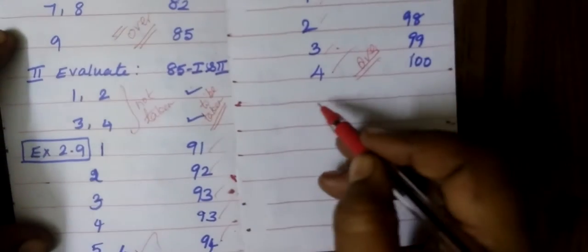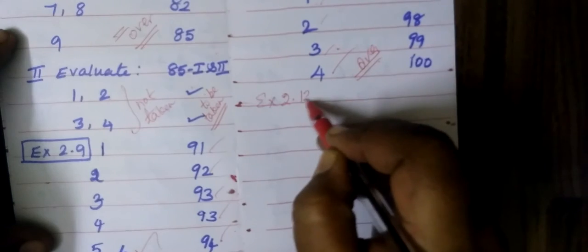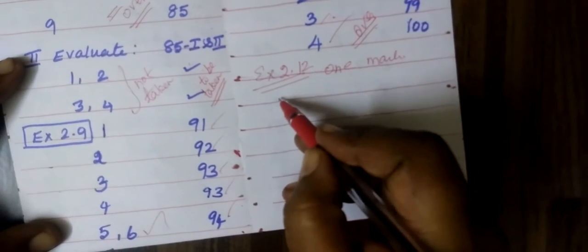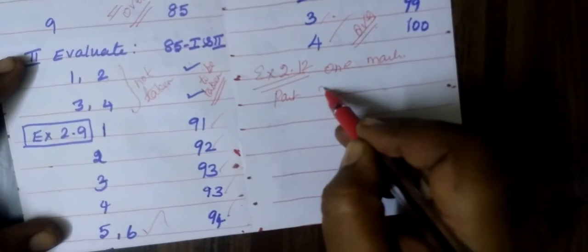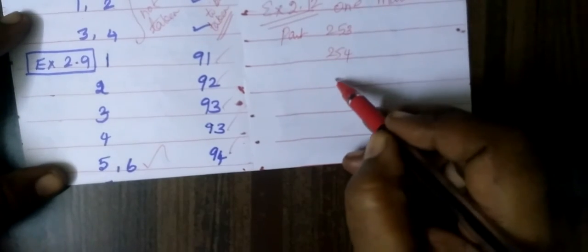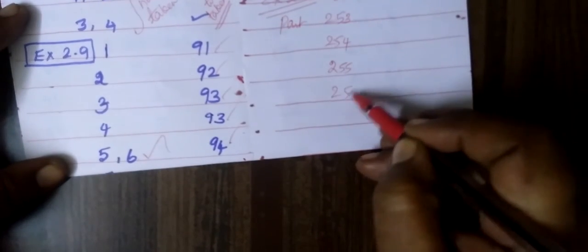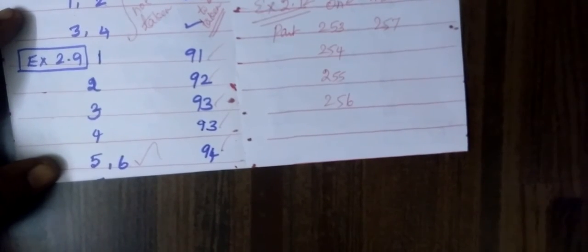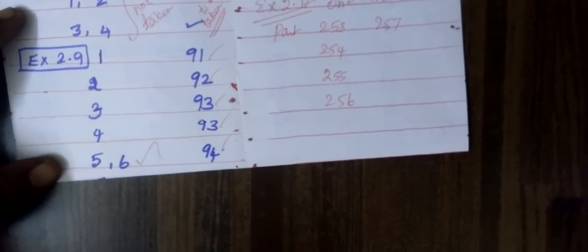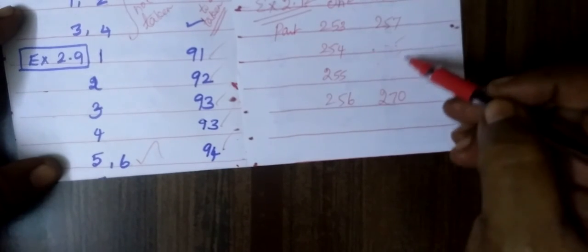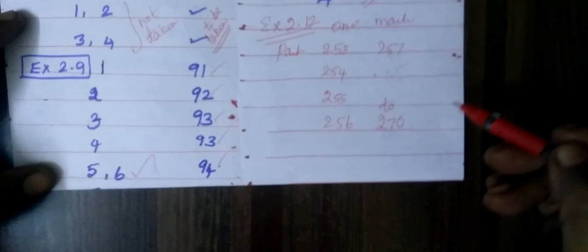Now one mark is 2.12, so this is one mark, part number 253, so part number 253 and then 254, then 255, then 256, 257. So this is one mark.